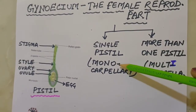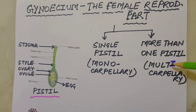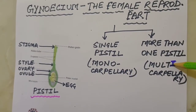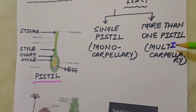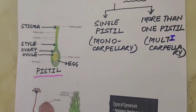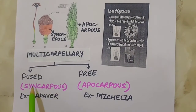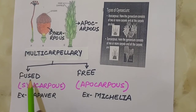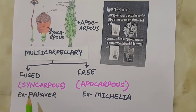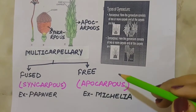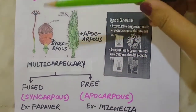In a multicarpellary condition, the pistils may be fused together or they may be free. If the pistils are fused, they are called syncarpous; if they are free, they are called apocarpous.